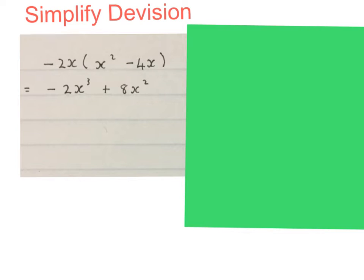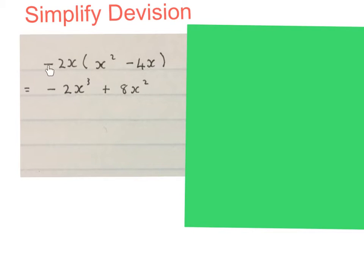Now I'm going to help you make a connection between a sum everybody understands and these division sums. This expansion sum should be familiar — you times minus 2X into the bracket. Minus times a plus is minus 2X to the power of 3, and minus times a minus is a plus, giving plus 8X squared. This technique is practiced hundreds of times in Grade 8 and 9. Now see if you can make a connection between this and the next sum.